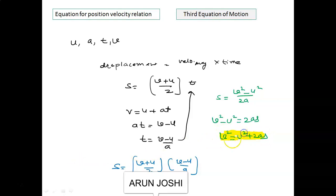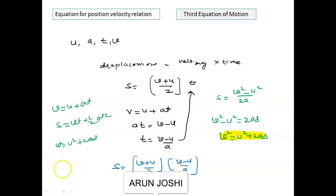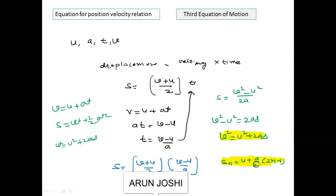We have now derived all three equations of motion. First: v = u + at. Second: s = ut + ½at². Third: v² = u² + 2as. Additionally, distance travelled in the nth second is given by u + (a/2)(2n − 1). Distance in t seconds is ut + ½at². Both formulas are important. Based on these four equations, we will solve numericals. Thank you.